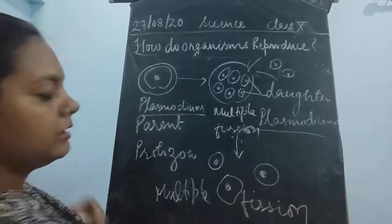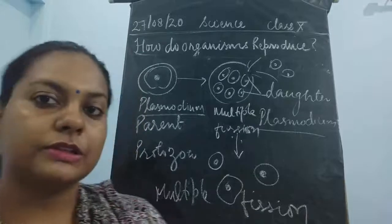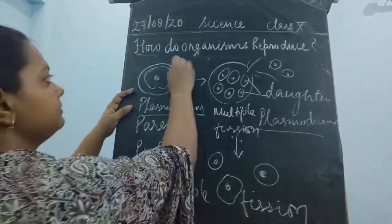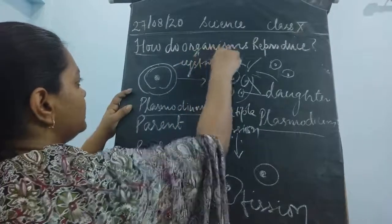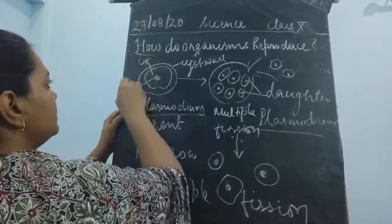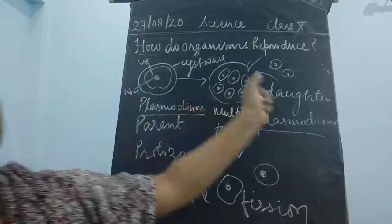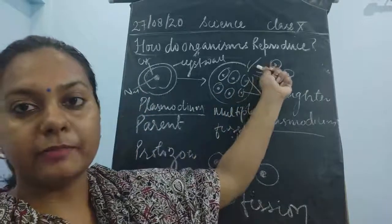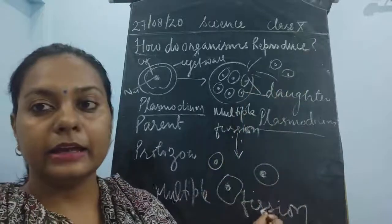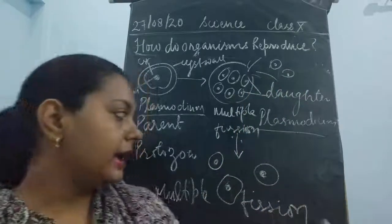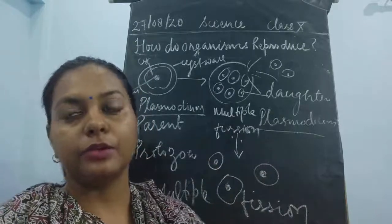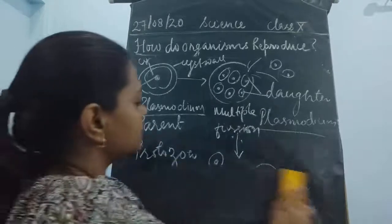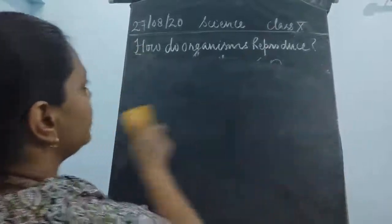So to summarize multiple fission: a cyst develops, the cyst wall forms, and inside it the cytoplasm and nucleus are present. The nucleus divides and re-divides, daughter cells accumulate small amounts of cytoplasm, and then the cyst wall breaks open — releasing all daughter cells into the surrounding environment. Each daughter cell grows independently and can cause malaria disease.